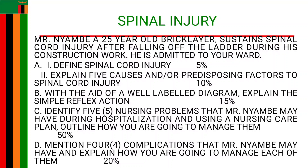All these physical traumas can cause injury to the spinal cord. We also have degenerative conditions, which can lead to spinal cord injury over time. For example, osteoarthritis, which can cause the vertebrae to compress the spinal cord, and degenerative disc disease, which can cause herniation of the spinal disc, causing spinal cord injury.